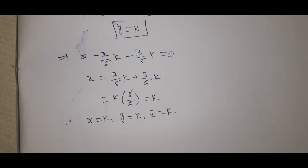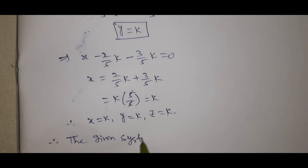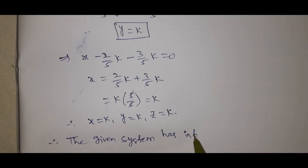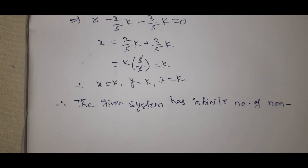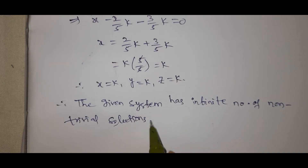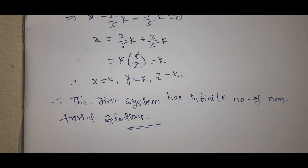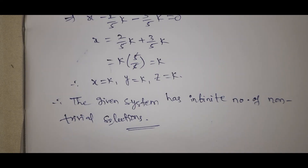Since the last row is a zero row, the system has an infinite number of non-trivial solutions. Therefore the given system has infinite non-trivial solutions when lambda equals 6 — confirming that 6 is the only real value. If you have any doubts, please comment. Please subscribe, like, and share. Thank you everyone.